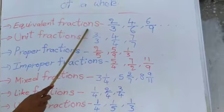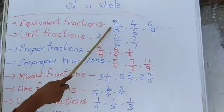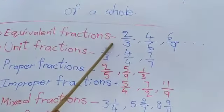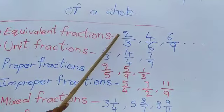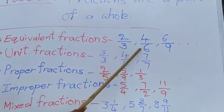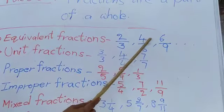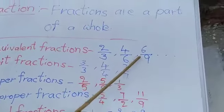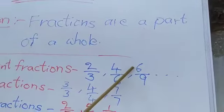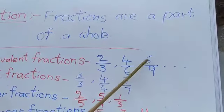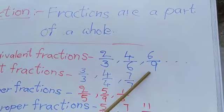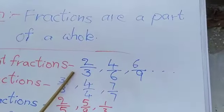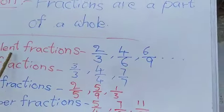Equivalent fractions — how do we say equivalent fractions? 2 by 3, 4 by 6, 6 by 9, and so on. These are equivalent fractions. Because 4 by 6 is also equal to 2 by 3, and 6 by 9 is also equal to 2 by 3. So these fractions are called equivalent fractions.